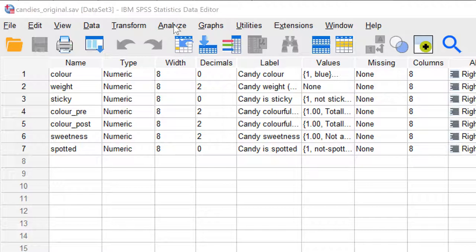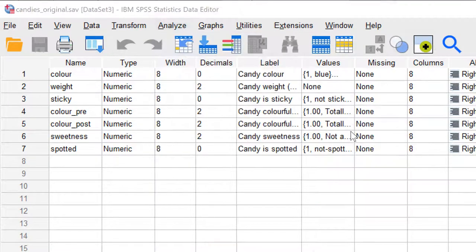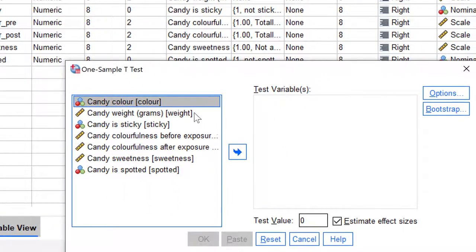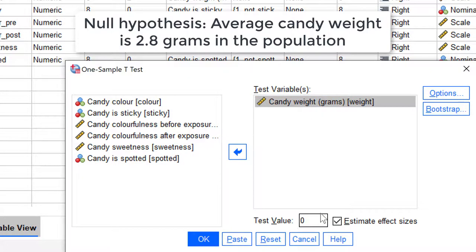In menu Analyze, open Compare Means and select One sample t-test. Select Candy Weight as the test variable and let us test the null hypothesis that average candy weight is 2.8 grams in the population. Enter 2.8 as the test value.